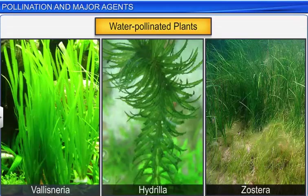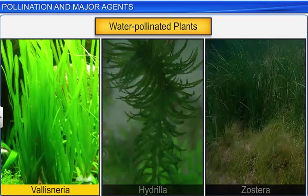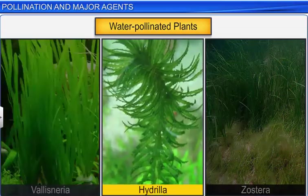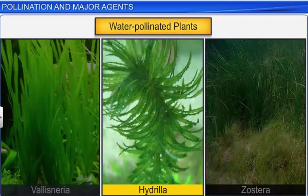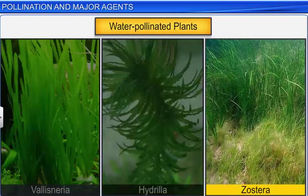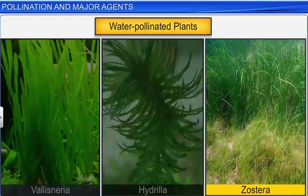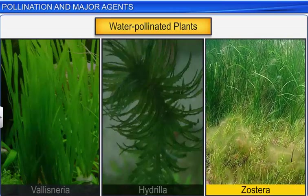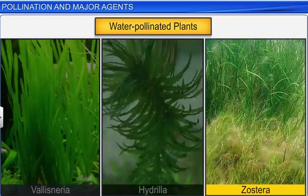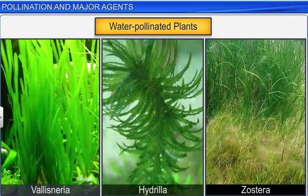However, in certain fresh water plants such as Vallisneria and Hydrilla, and marine sea grasses such as Zostera, pollination occurs by water. This is also known as hydrophily.